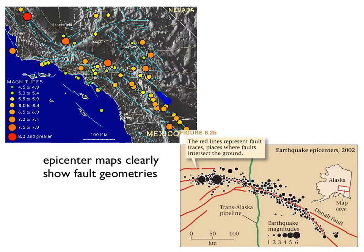Very often, epicenter maps can clearly show fault geometries. For example, in the upper photo you can see earthquake epicenters lining up along a structure — this is the southern San Andreas fault heading down into the Salton Trough. Similarly, you can see the Denali fault trace. In fact, that's often how we map faults: based on maps of earthquake epicenters. You can also see epicenters tracing another fault over here.